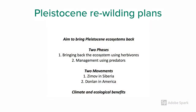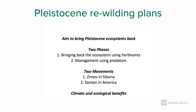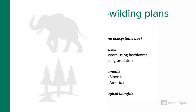Pleistocene rewilding plans aim to bring these ecosystems back. These plans require carefully managed ecosystem manipulations using closely related species like elephants, and have two general phases. We will discuss these plans using two existing movements and also explain the climate and ecological benefits.